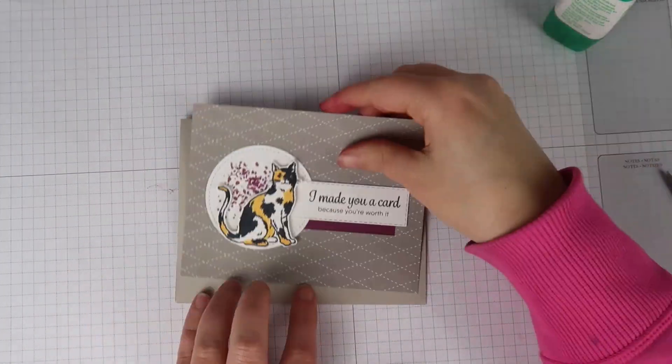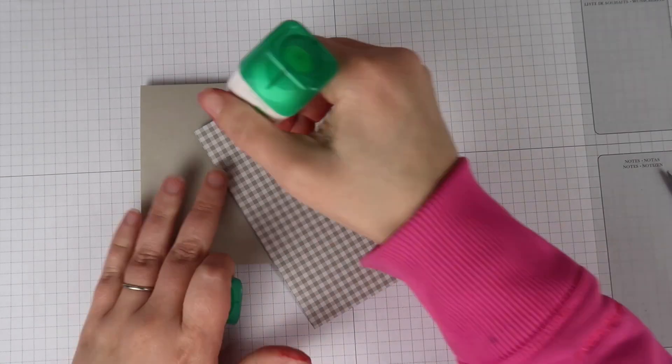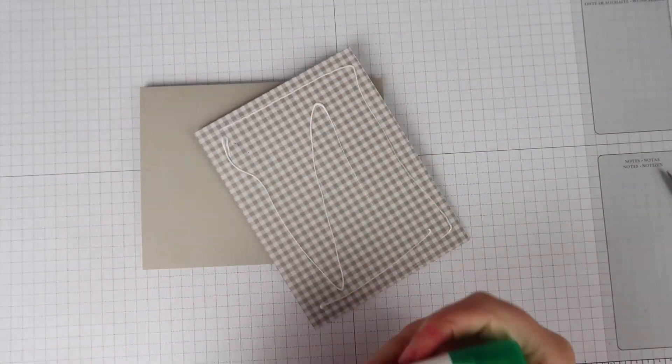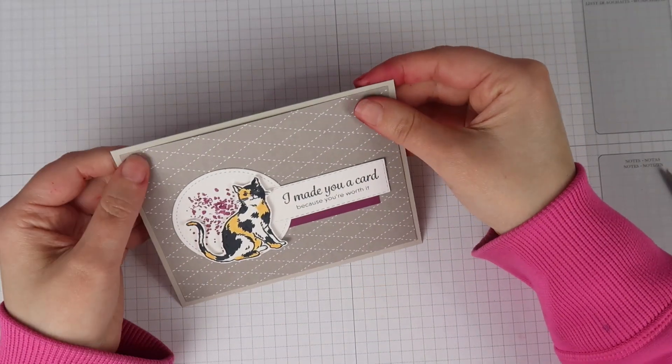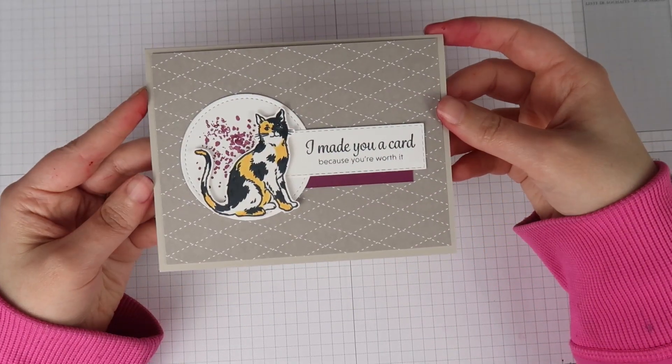So now I've got a piece of coordinating paper to go in the back of my card. And I'm just going to glue this panel straight to that cardstock. That way it has a little border there.